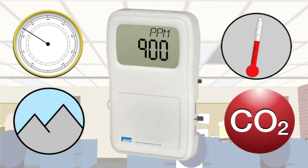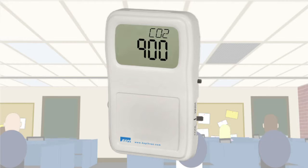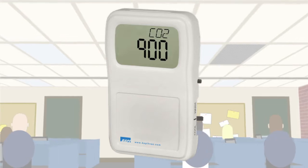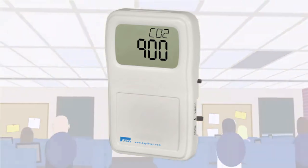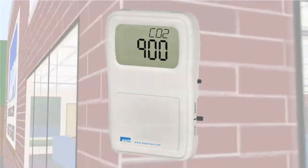That's why all BAPI CO2 sensors have a built-in barometric pressure sensor and temperature sensor, and each CO2 measurement is automatically compensated based on the current pressure and temperature. This makes the BAPI sensor one of the most accurate CO2 sensors in the HVAC industry, and one that you can rely on for demand controlled ventilation.